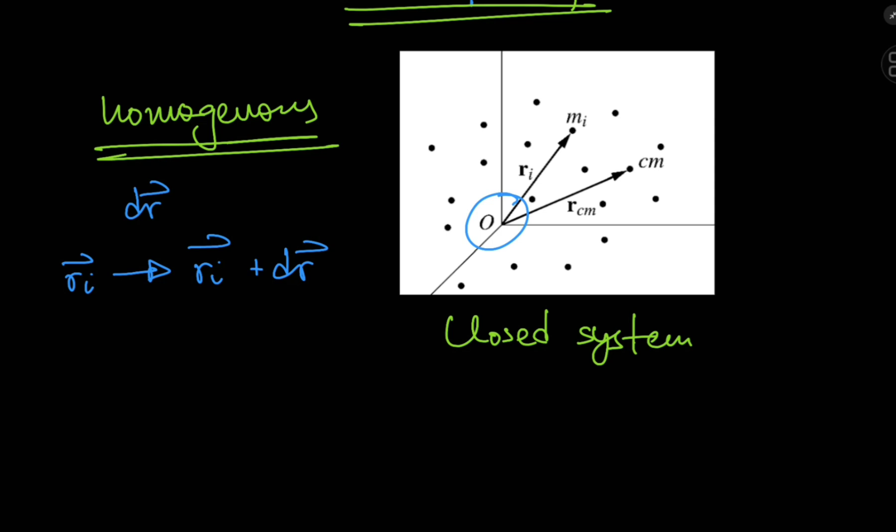So let's say we have a closed system and we subject this closed system to an infinitesimal displacement dr. So all the position vectors of the particles, that is r_i, get shifted to r_i plus dr, and we haven't altered anything else in the system. This is equivalent to a shift in the origin. We just argued that such a displacement does not alter the equations of motion governing the behavior of the mechanical system, so that means there will be no change in the form of the Lagrangian.